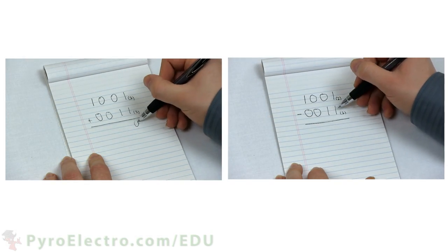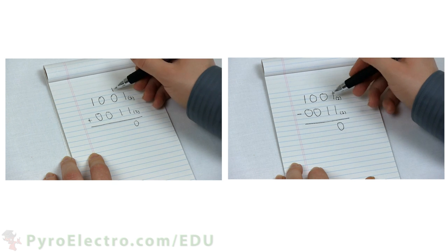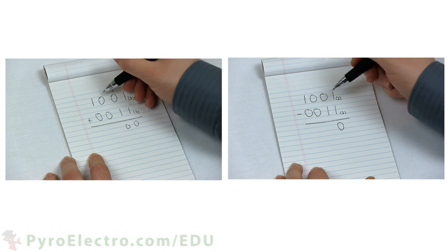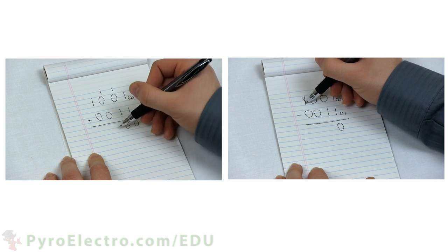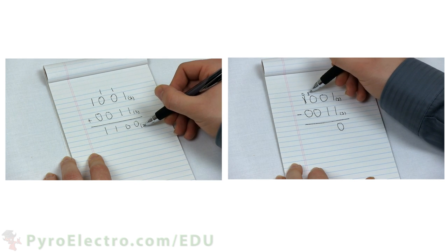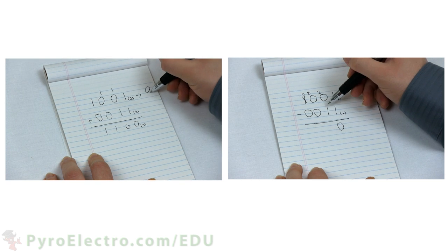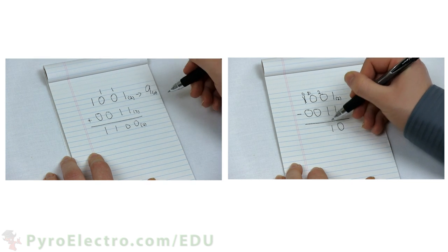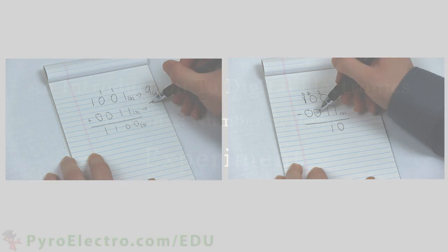These examples show you how the binary number system applies the same rules as the decimal number system, but that everything is simplified by only having 0s or 1s. Multiplication and division and even long division can be done as well. However, we'll skip those for now.